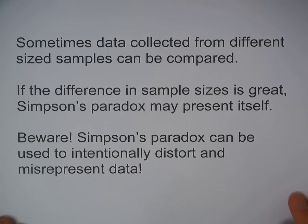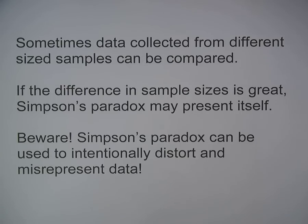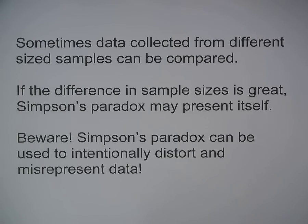Sometimes data collected from different size samples can be compared. If the difference in sample size is great, Simpson's paradox might present itself, so be wary when comparing data sets with very different sample sizes. Simpson's paradox can be used to intentionally distort and misrepresent data. In the baseball example it's probably not the end of the world, but sometimes data can be aggregated to show what people want to show instead of looking at the big picture. That has been the tutorial on Simpson's paradox. Thanks for watching.